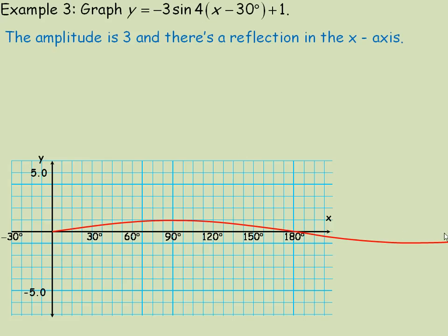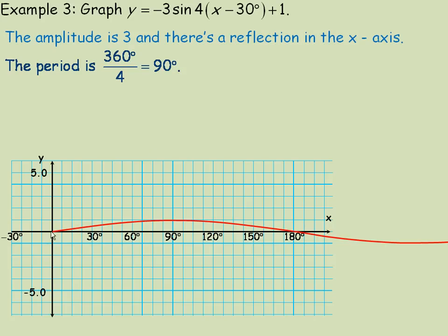We don't see out to 360 degrees — from one end to that point is actually 180 degrees, half a cycle. The 4 affects the period: 360 degrees divided by 4 is only 90 degrees. So from 0 to 90 degrees we'll see one cycle exactly.